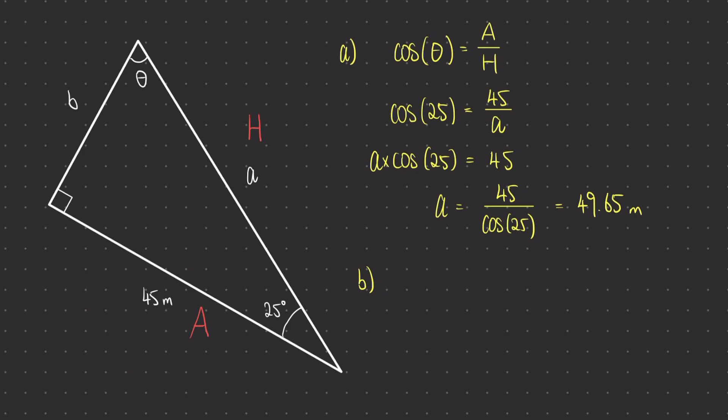For part B we're not going to need to relabel the triangle in any sort of way, because we're still dealing with the angle of 25 degrees. However in this case we need to label the side with lowercase b capital O, because it is the opposite side to our angle 25.